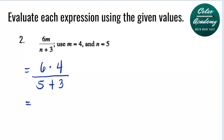Simplifying the numerator: 6 times 4 is 24, and the denominator is 5 plus 3, which is 8. And of course, 24 divided by 8 is 3.